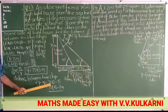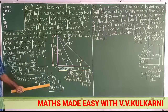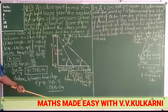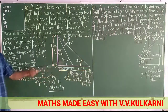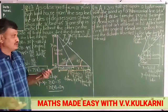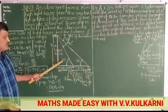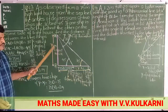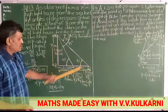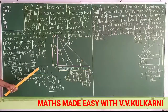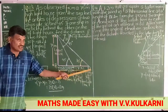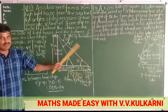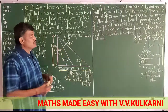Suppose in the examination if they give the value of root 3 as 1.73, then 1.73 minus 1 will be equal to 0.73. So 75 into 0.73 — depends upon the situation. Very simple: first triangle you take, you get x as 75. Second triangle, you get y as 75 root 3. And the difference of the two bases will give you the difference between the ships. That is all.